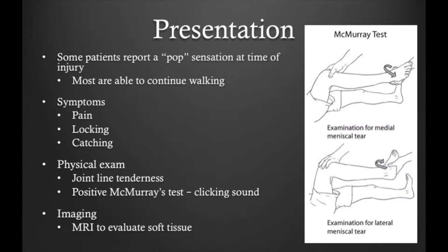Patients who report a meniscus tear often report a pop due to a twisting injury. However, many patients often present with chronic joint line pain due to overuse activities such as running, CrossFit, and high-intensity exercise. Symptoms include pain, locking, and catching. On physical examination, patients typically have pain along the joint line, as well as a variety of positive orthopedic tests such as the McMurray's test.